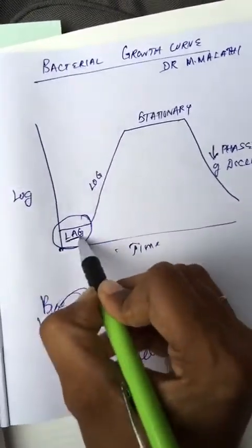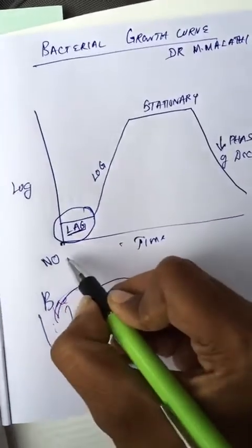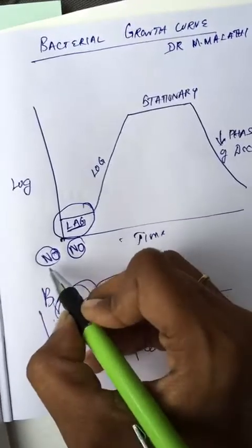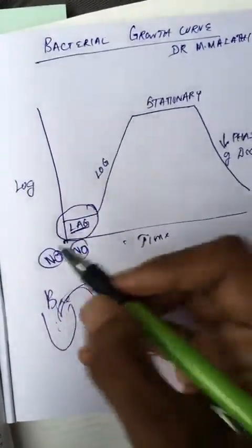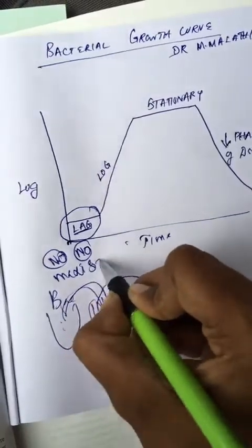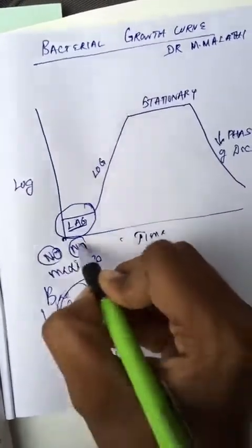So in lag phase, lag means there is nothing happening. In lag phase, there is no increase in cell number, but there is maximum cell size. Maximum size, no number.